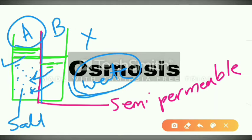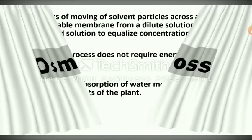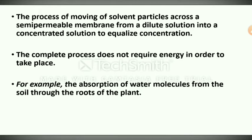Until equilibrium is reached, that process is called osmosis. Osmosis is the movement of particles from a region of higher concentration to the region of lower concentration through a semi-permeable membrane. The process of moving solvent particles across a semi-permeable membrane from a dilute solution into a concentrated solution to equalize concentration does not require energy. An example is the absorption of water molecules from the soil through the roots of a plant.